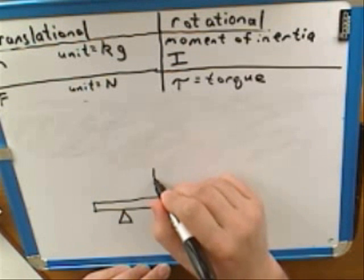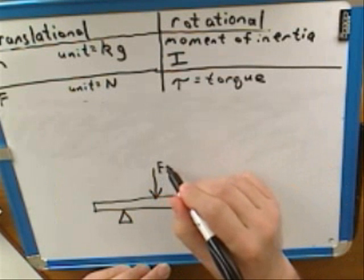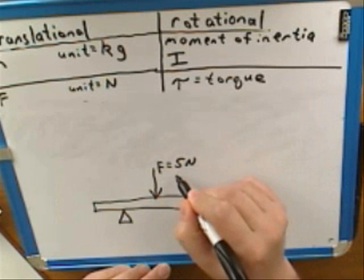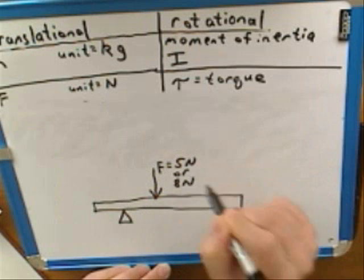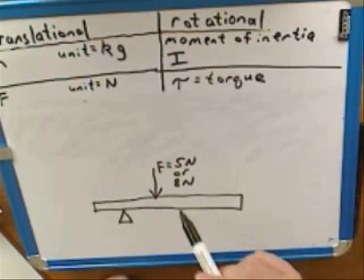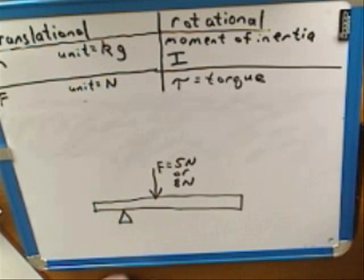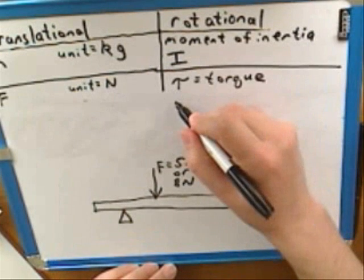So let's think about what would be the things that would affect the rotation of the teeter-totter. For example, we could exert a force on the object. We might exert, say, a 5-Newton force, or maybe an 8-Newton force. Which of those forces do you think would have a bigger effect on the rotation? The 5-Newton force or the 8-Newton force? The 8? Pretty much common sense, huh? Yeah.